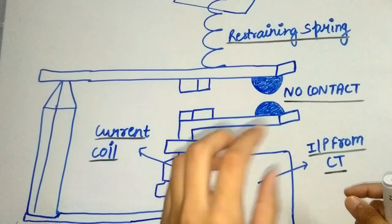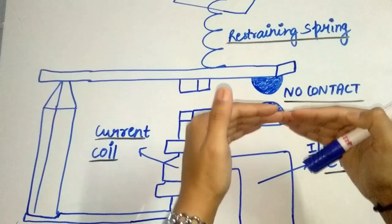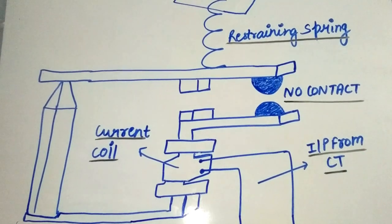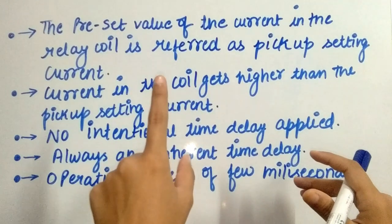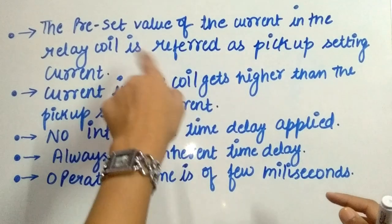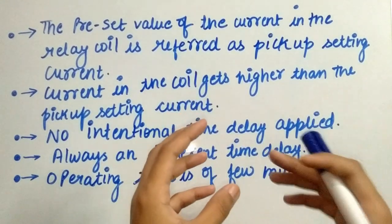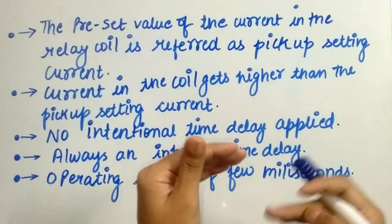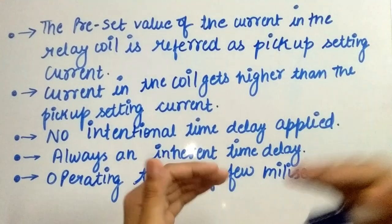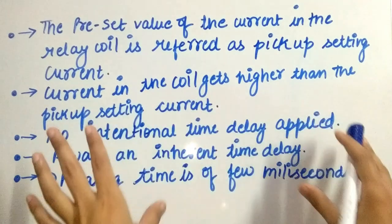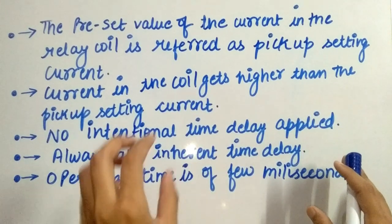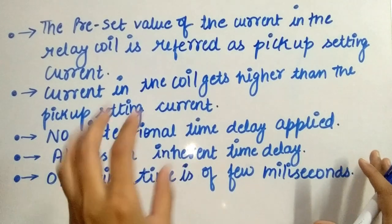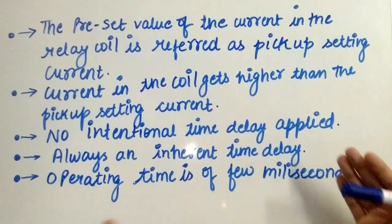The attractive force becomes enough to pull the iron piece towards the magnetic core, and as a result the normally-open contacts will close. The preset current value in the relay coil is referred to as the pickup setting current. The relay operates as quickly as possible — as soon as the coil current exceeds the pickup setting current, the relay operates. No intentional time delay is applied, but there is always an inherent time delay which we cannot avoid practically. In practice, the operating time of an instantaneous relay is a few milliseconds.